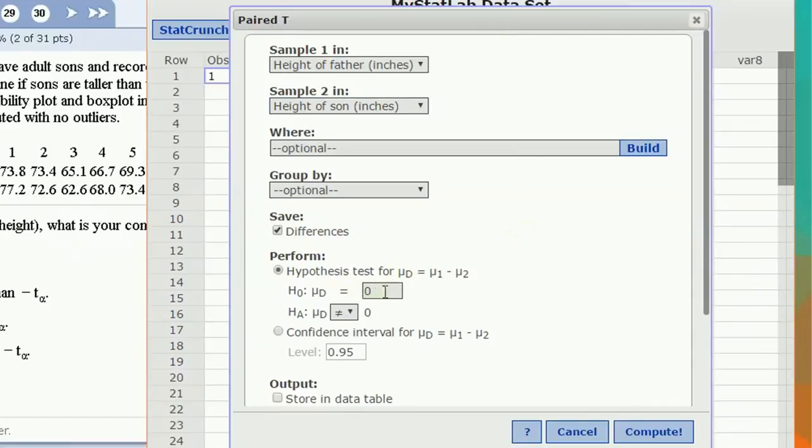Now the null hypothesis is that the difference of means is zero. But the alternative is that the difference of means is what? We want to see if the sons are taller than their fathers. That means father's height minus son's height should be negative, less than zero. If the son's mean is bigger than father's mean, mu1 minus mu2 should be negative. So that's the alternative we want to pick. Now I want to click compute.